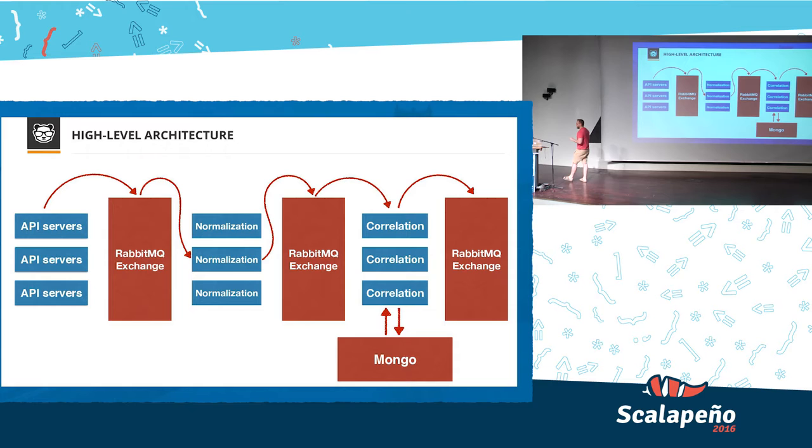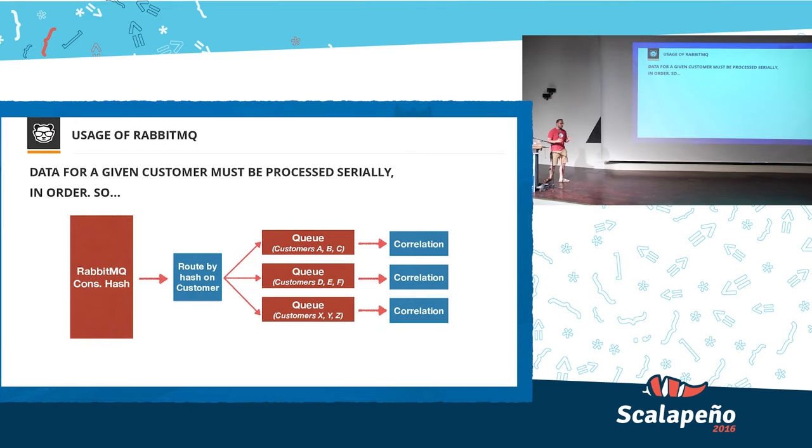In order to do correlation properly, we have to process the data for a given customer serially. We can't do it concurrently. We can do it concurrently if we use distributed locks, but that's not really concurrency. Whenever an alert arrives, we route it always to the same server, using a hash on a customer ID. That's consistent hashing. There are several queues attached to RabbitMQ exchange. Each one contains data for several customers, and data for a given customer will always be routed to the same queue. And there is only one server reading from a given queue at any given time.